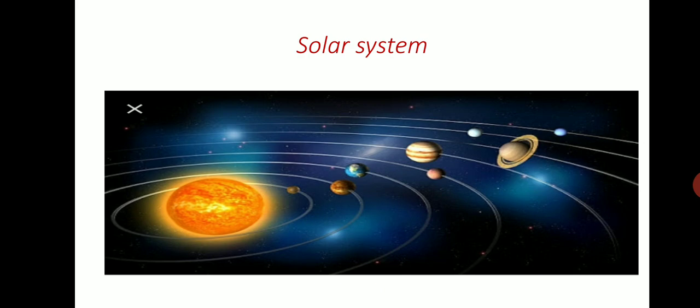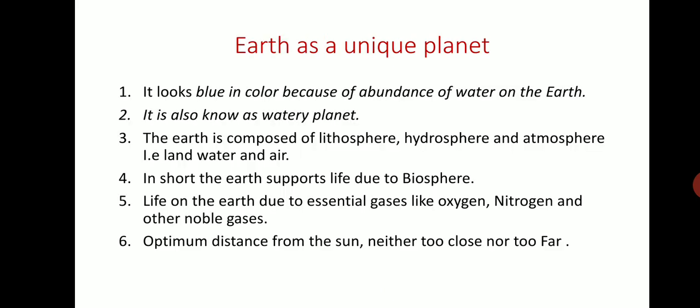Earth is the third planet in the Solar System, and it is considered a unique planet. Why is Earth considered unique? First, abundance of water on Earth. 71% of Earth is covered by water, so it is also known as the Blue Planet or Watery Planet.